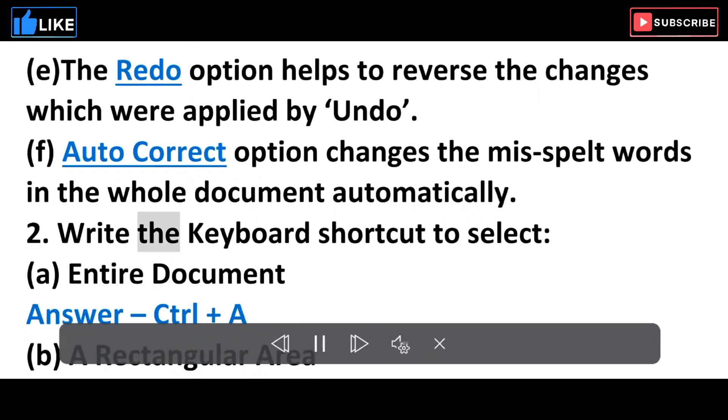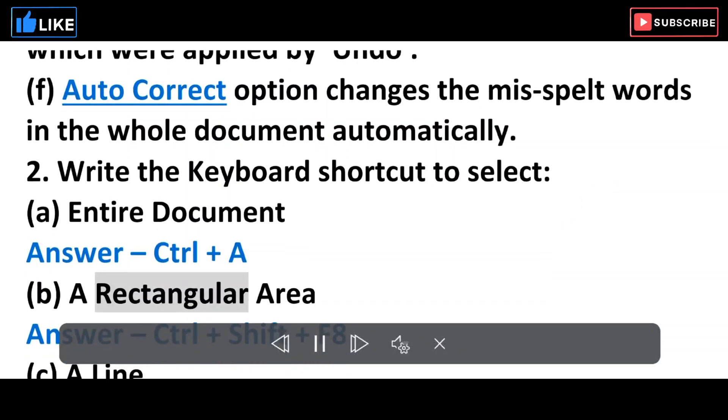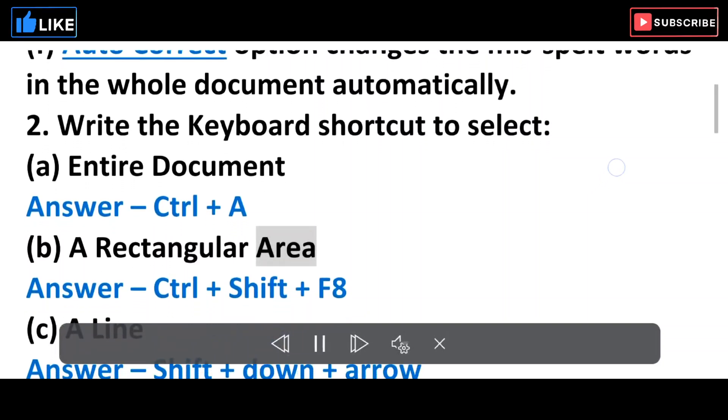2. Write the keyboard shortcut to select: A. Entire document - Answer: Ctrl+A. B. A rectangular area - Answer: Ctrl+Shift+F8.